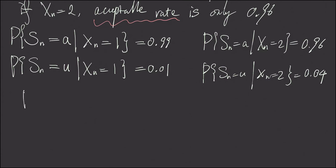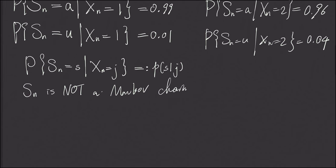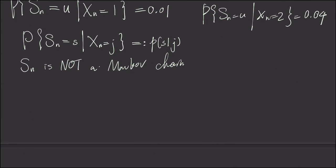And in general, we use this notation: S sub n equals little s, given xn is j. And we denote this by little p(s, j). First, we have to acknowledge the fact that S sub n is not a Markov chain. Because its conditional probability is not based on itself, but it's dependent on another process, which is our hidden Markov process. And moreover, however, we do have the following fact.